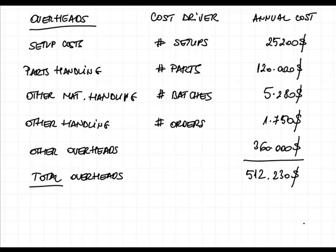In ABC costing, we split up the total overheads into activities. These activities have already been identified for us. In your exam, you will be given something similar — you don't have to identify the activities and cost drivers yourself; they will be given to you, maybe not in a nice tabular format but in the text. This company has four activities: setups, part handling, other material handling, and other handlings.